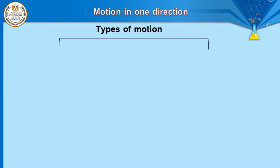Second, we will talk about types of motion. In the previous year — prep two — we talked about some types of motion. What are these types? Number one: translational motion. Number two: periodic motion. How can we differentiate between these two types of motion, as we discussed in the previous year?